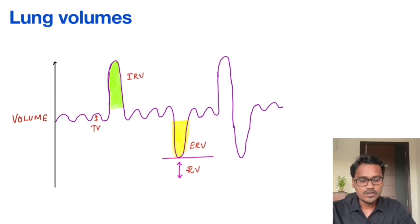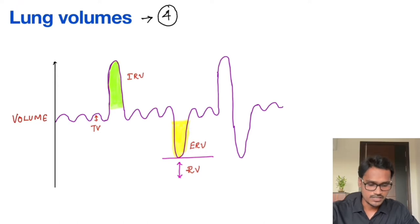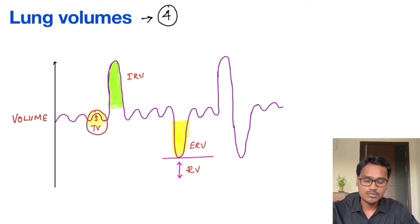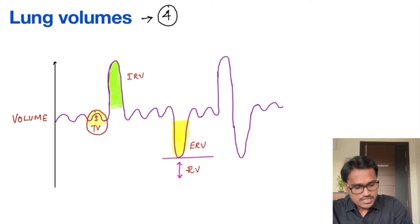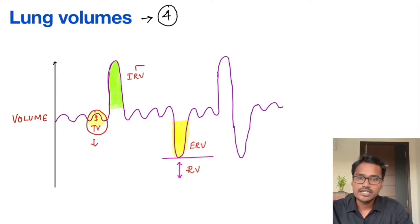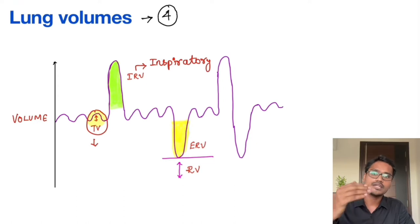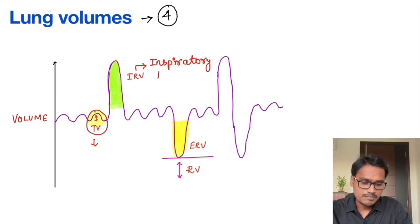Now let's see how from this recording the volumes and capacities are calculated. We have four lung volumes and four capacities. The normal inspiration and expiration taken by the person is called tidal volume — the normal amount of air that is breathed in or out. The second volume is IRV, inspiratory reserve volume — the amount of air that can be breathed in over and above the tidal volume. If the person has taken some tidal volume and then breathes deeply in, that additional volume is the inspiratory reserve volume. We will see their values in the next slide.